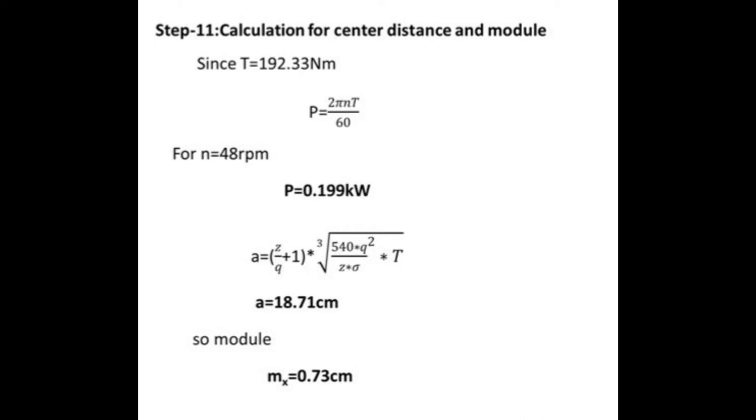For center distance, the formula of A is given. By substituting all the values, the center distance A is coming out to be 18.71 cm. So module mx equals 0.73 cm.